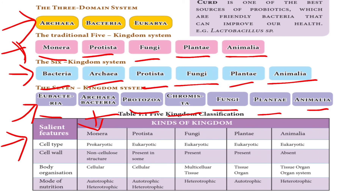In the five-kingdom classification, the first kingdom is Monera. The cell type is prokaryotic — first-formed nucleus. Cell wall may or may not be present. Body organization is cellular — only one cell. Mode of nutrition is autotrophic, meaning it can prepare its own food, or heterotrophic, meaning it depends on another organism.